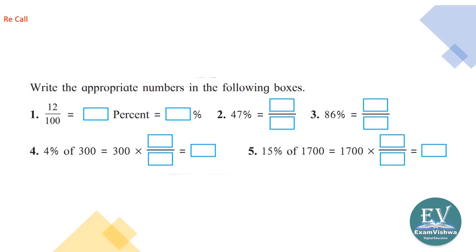12 upon 100 means 12 percent, written like this. 47 percent means 47 upon 100. 86 upon 100 is 86 percent. 4 percent of 300 means 300 into 4 upon 100, which is equal to 12.